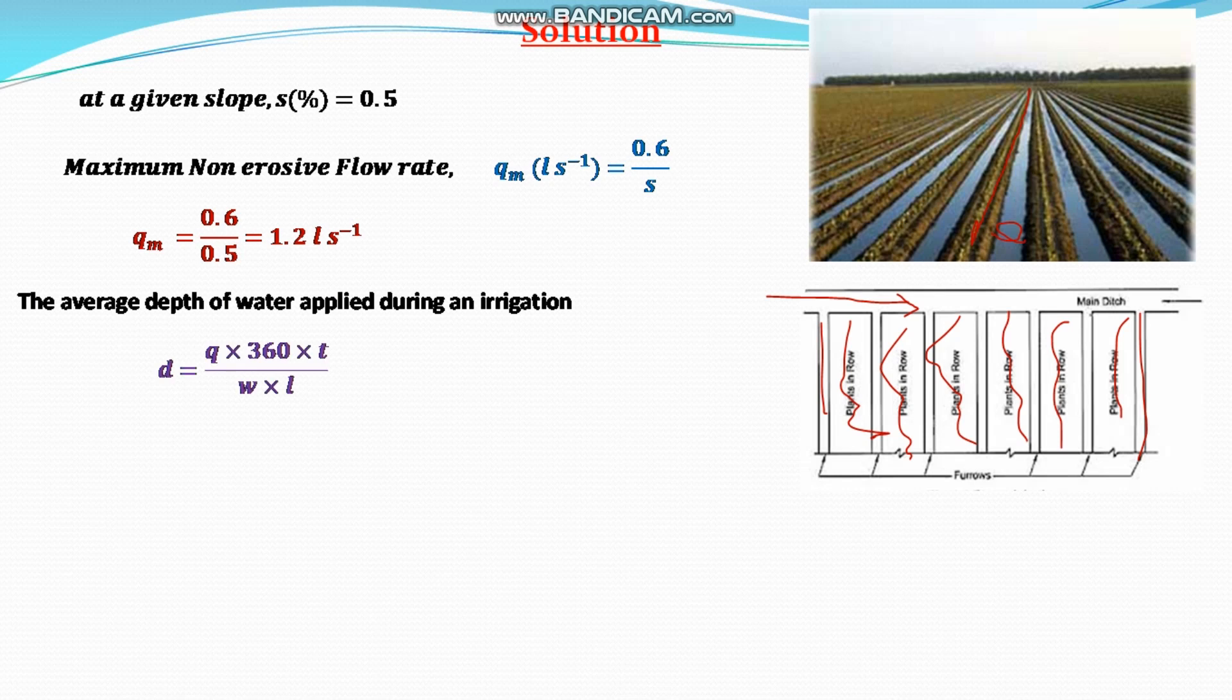That will be equal to d = q × 360 × t / (w × l), where d is the depth of applied water in centimeter, q is the maximum discharge or flow rate in liter per second, and 360 is for hour, and t is in one hour. t is time in hour, divided by w, the width of the furrow in meter, and l is the length of the furrow in meter.